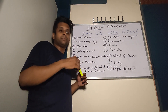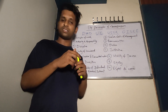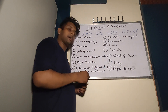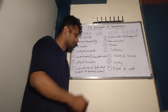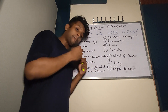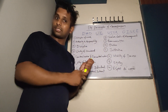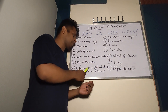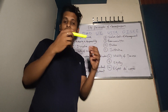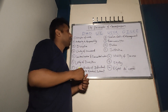Subordination of Individual Interest to General Interest: Subordinates are employees working under a manager. Everyone who joins an organization has their own personal interests. It is management's duty and responsibility to align those individual interests with the general interest — which is the company's interest — so that employees work enthusiastically toward the common goal.